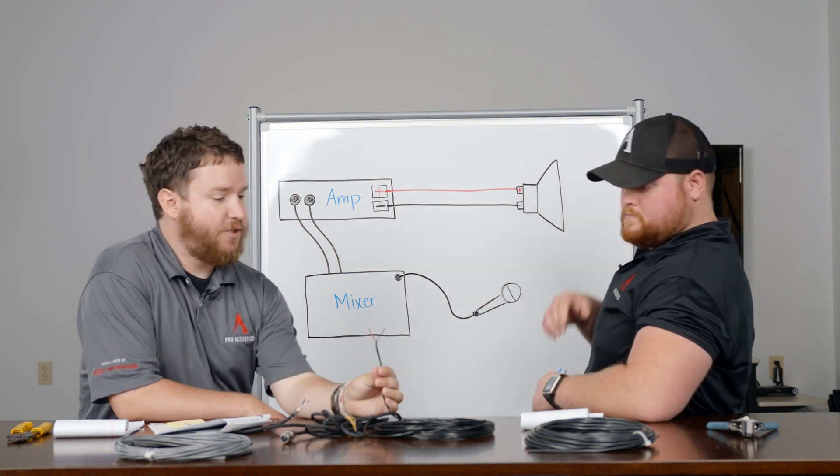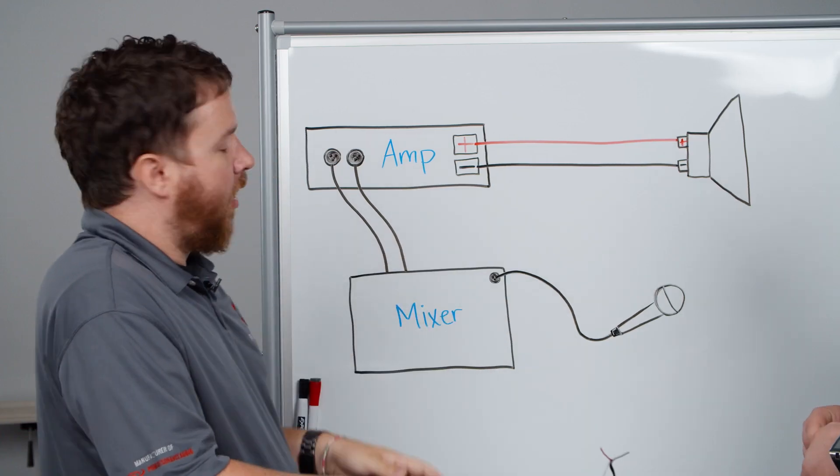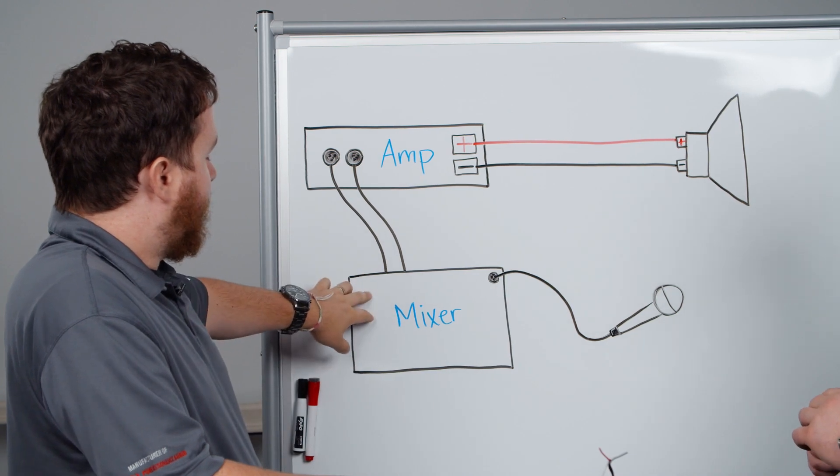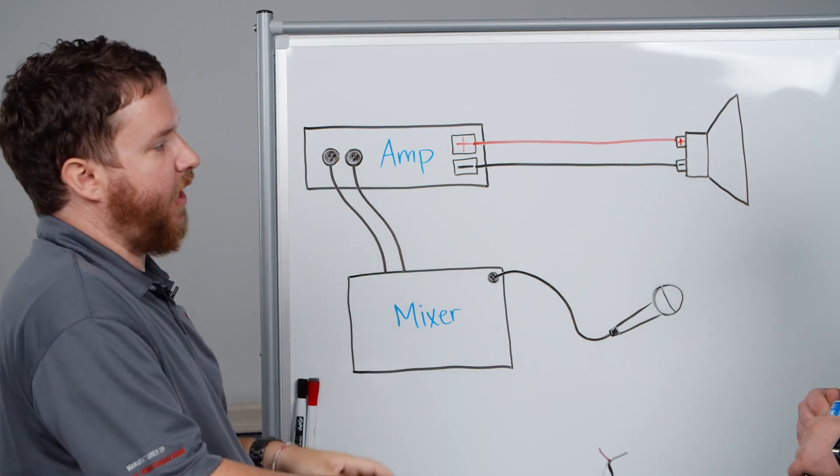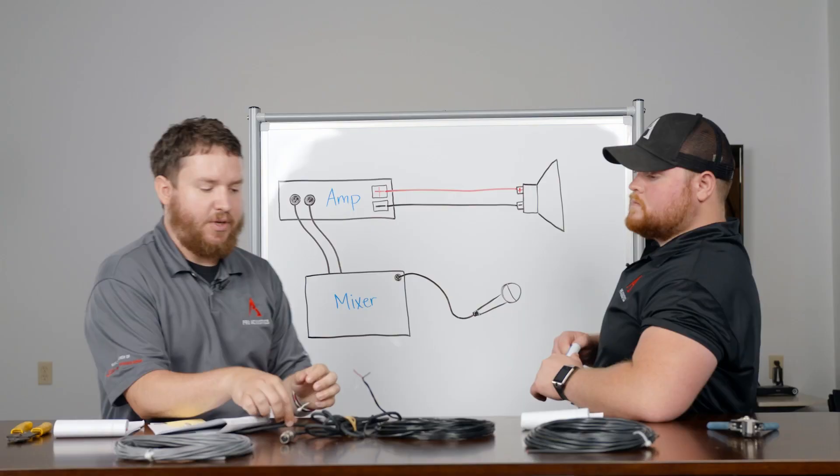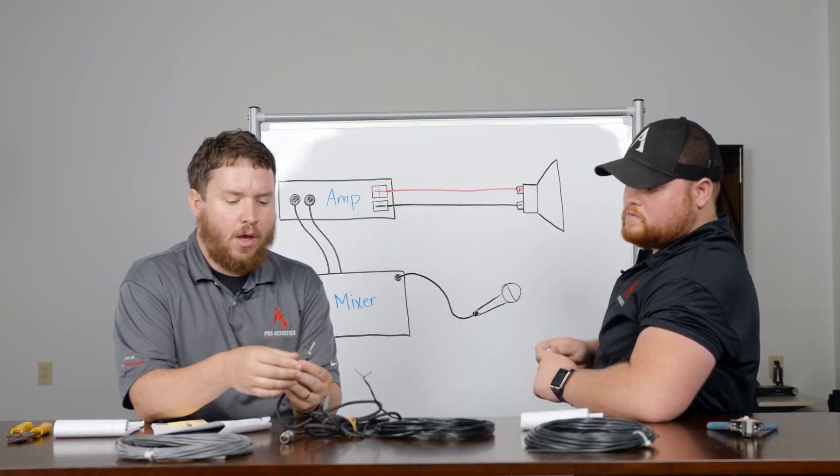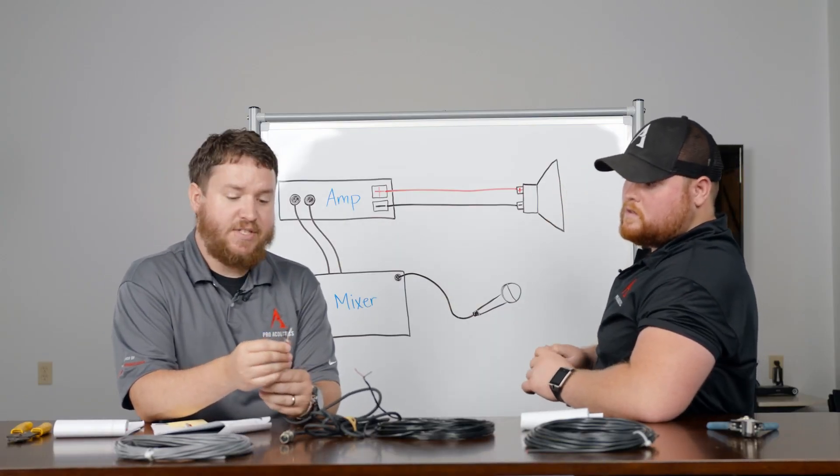So that's one place where cabling and wiring is very important, but we also got to get the signal to the amplifier. Like I mentioned, we've got two conductors here, positive and a negative, but we have a different kind of signal going from the mixer to the amplifier. That can actually be a much thinner gauge cable, which actually carries audio signal.